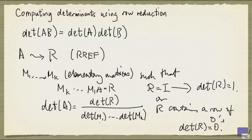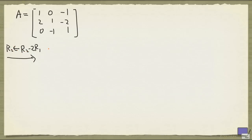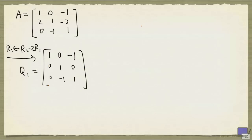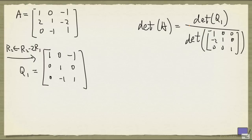Before we look at determinants of elementary matrices in general, let's look at an example to see how this observation can be used to compute the determinant of A. So let's row reduce A by adding minus 2 times the first row to the second row. That will give us a new matrix, which we'll call Q1. The determinant of A is going to be the determinant of Q1 divided by the determinant of the elementary matrix corresponding to this row operation, which has determinant 1. So this is the same as the determinant of Q1.